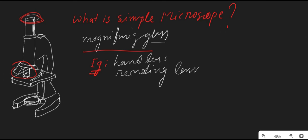In a simple microscope, an object is kept near the lens — this is called the objective lens. The object is placed within the principal focus of the lens, and an image is produced. This image is a large and magnified image of the tiny object. The produced image will be larger and clearer as compared to the original tiny object.